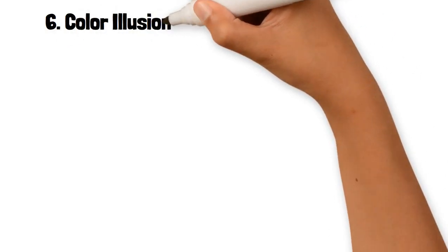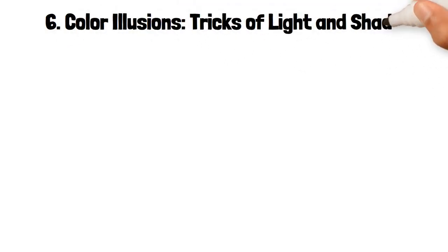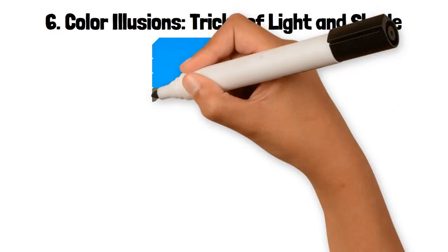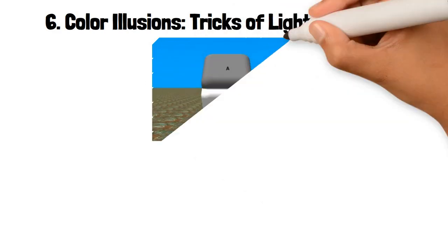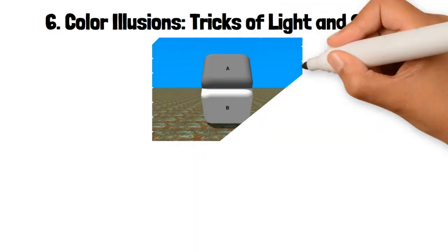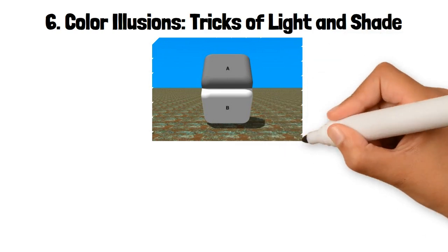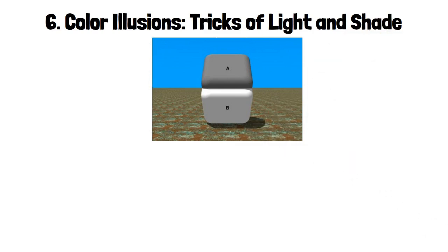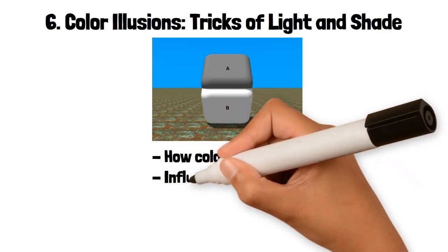6. Color Illusions: Tricks of Light and Shade. Color illusions occur when the brain misinterprets the color of an object due to the surrounding colors, lighting conditions, or patterns. These illusions highlight how color perception can be influenced by context.